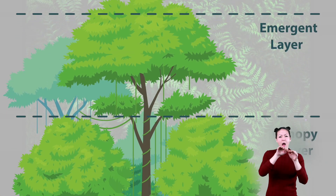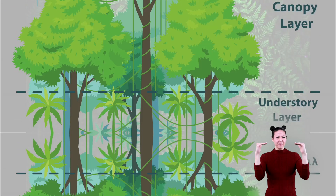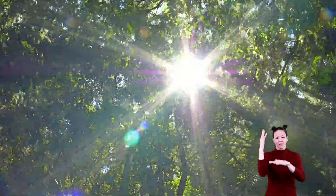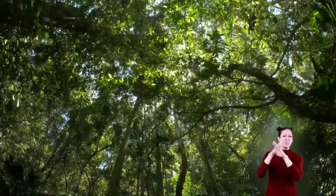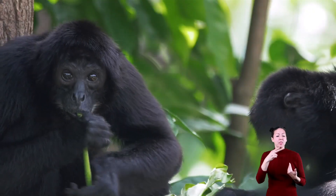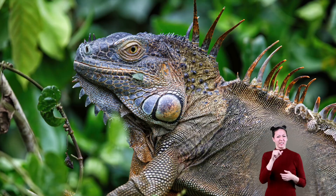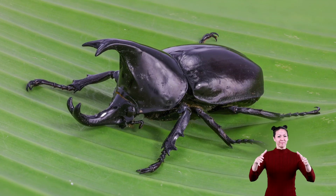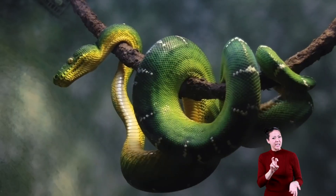Next is the canopy layer. The canopy is like a roof to the rest of the rainforest, stopping most of the rain. Animals like sloths and monkeys, frogs, birds, and lizards all live here, along with other insects and snakes.